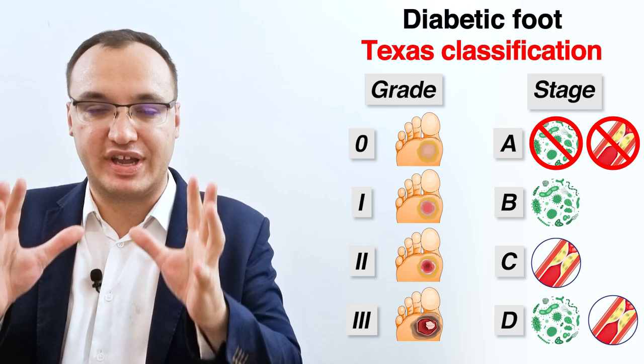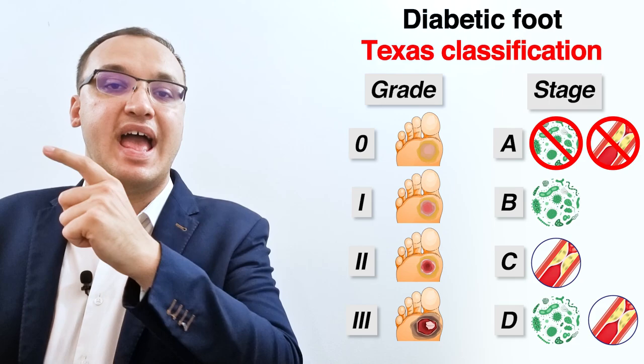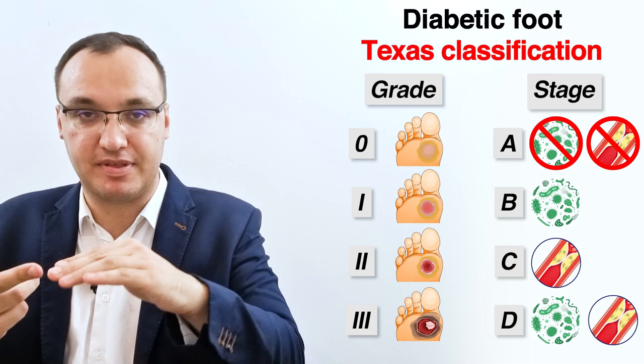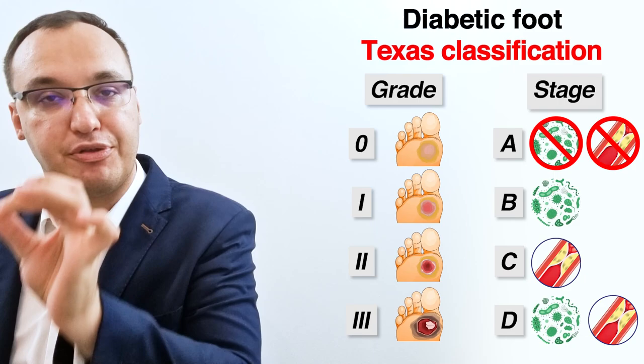In conclusion, when you have a wound, look at three main things: infection, peripheral artery disease, and wound depth. The wound depth is the grading: grade zero is superficial, one is full skin, two is joints, and three is bones. For staging: stage A is no infection and no peripheral artery disease, stage B is infection, stage C is peripheral artery disease, and stage D is both. Thank you very much for listening. Take care, bye bye.